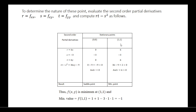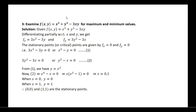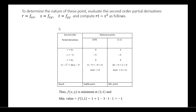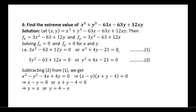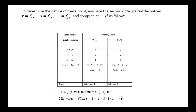For the stationary point (1, 1), the corresponding values give rt minus s squared greater than 0, and r is also greater than 0. Therefore, the function has a minimum at (1, 1). We find the minimum value by substituting x equals 1 and y equals 1 in the given function, and we get the minimum value as minus 1.